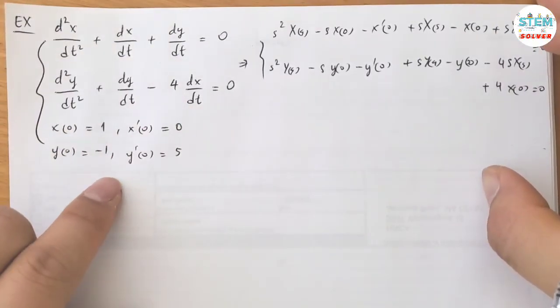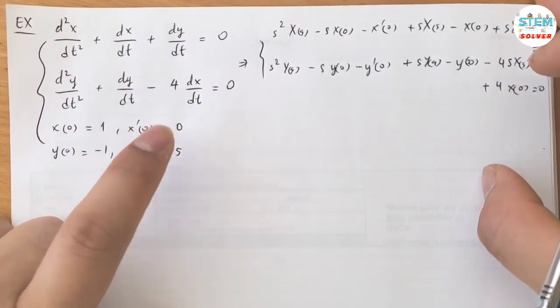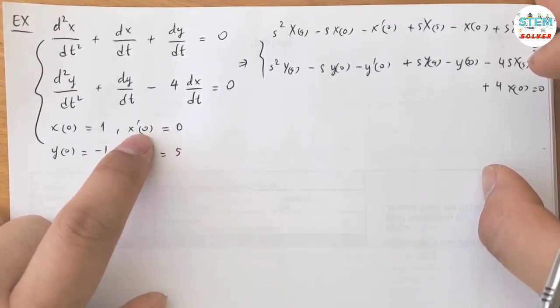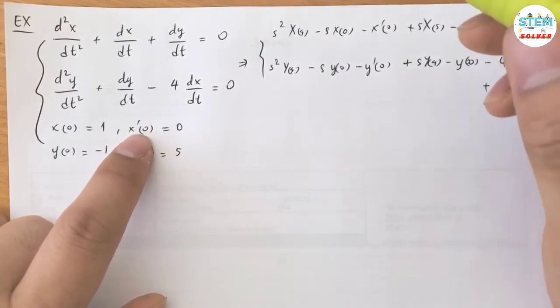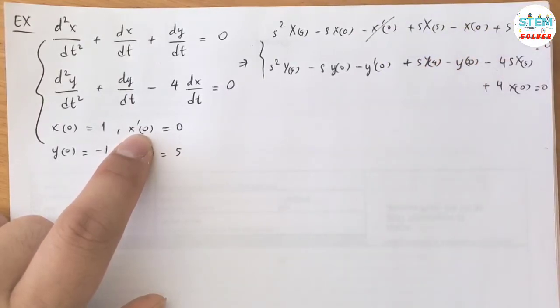Now look at the conditions. We have x of 0 equals 0, and x prime of 0 equals 0.